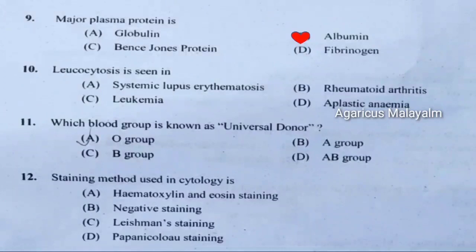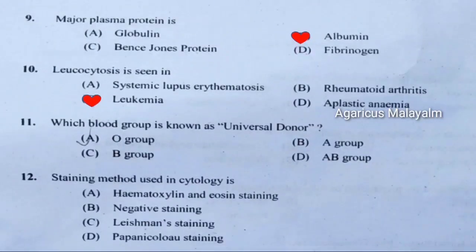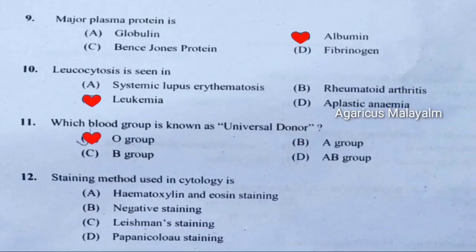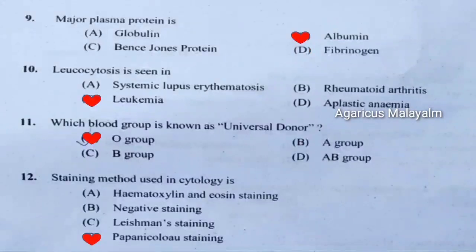Tenth question: Leukocytosis is seen in. Correct answer is option C — leukemia. Eleventh question: Which blood group is known as universal donor? Correct answer is option A — O group. Twelfth question: Staining method used in cytology is. Correct answer is option D — Papanicolaou staining.